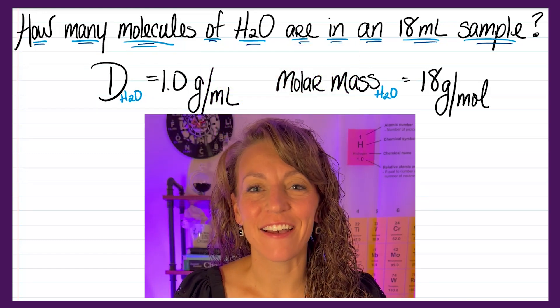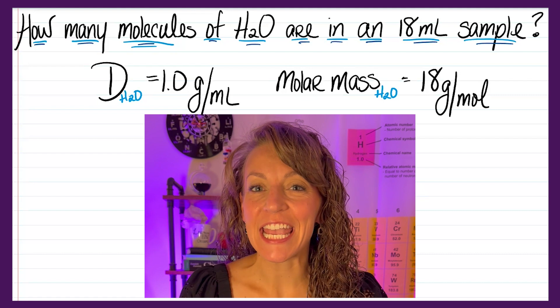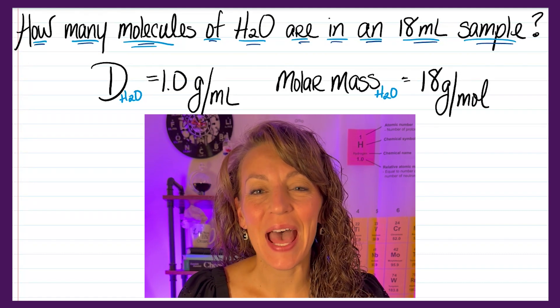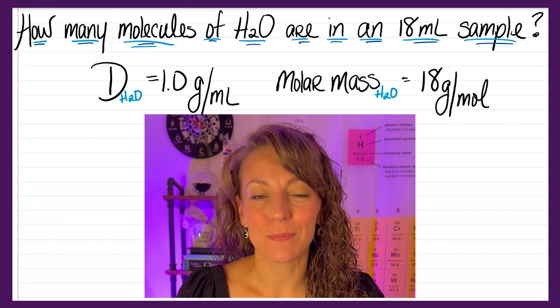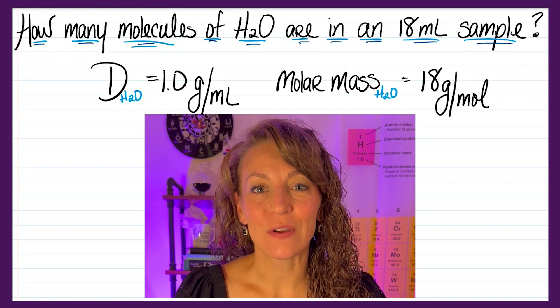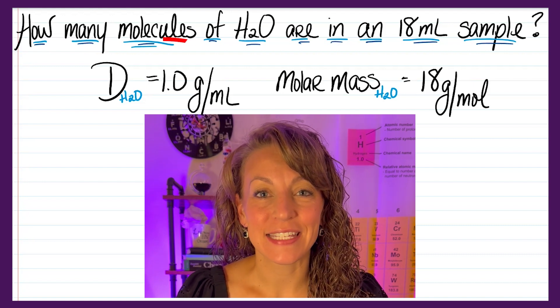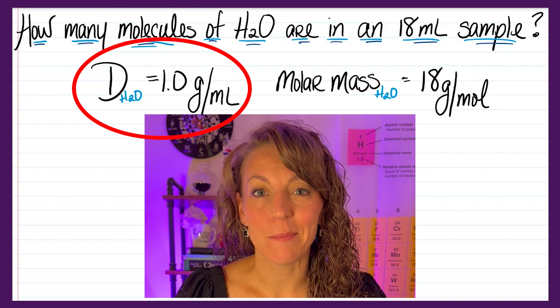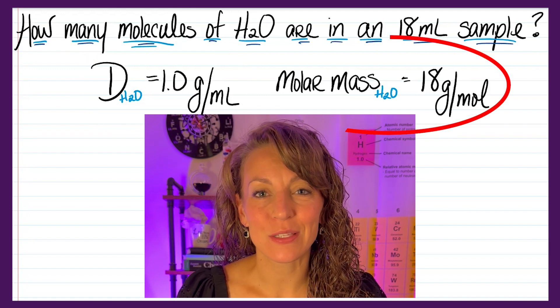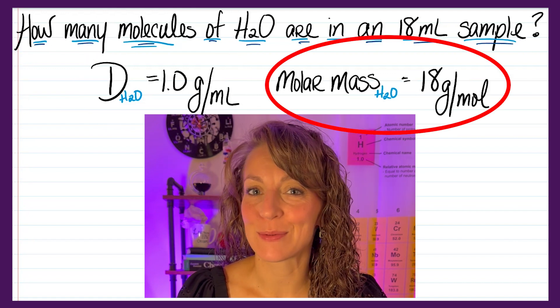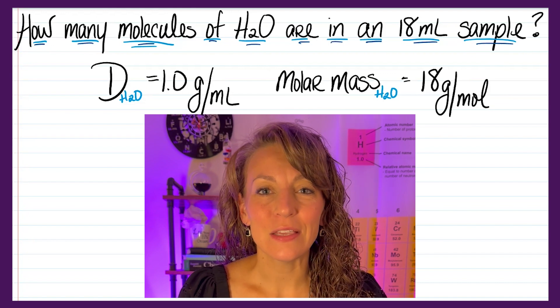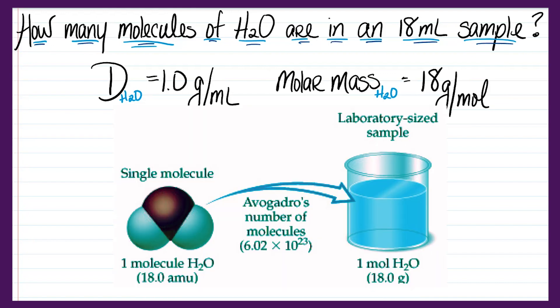If I'm trying to calculate the number of water molecules in an 18 milliliter sample, I'm going to need a couple extra pieces of information. For instance, I know that the density of water is 1 gram per milliliter, and the molar mass of water is 18 grams per mole. These are going to help me convert between milliliters of water and molecules of water.